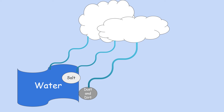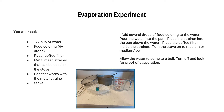Next we're going to do a short experiment that shows you what evaporation looks like. If you're going to do this experiment at home, first you'll need a parent — you will be using the stove. You're going to need a half cup of water, some food coloring, a paper coffee filter, a mesh metal strainer, and a pan. You're going to put some drops of food coloring in the half cup of water and put it into the pan.